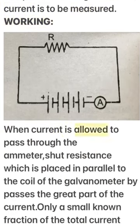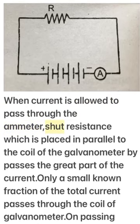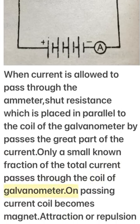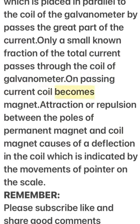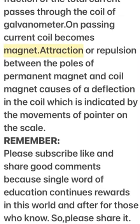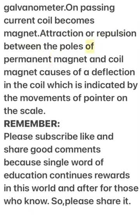Connection: The current is allowed to pass through the ammeter. The shunt resistance, placed in parallel to the coil of the galvanometer, bypasses the greater part of the current. Only a small known fraction of the total current passes through the coil of the galvanometer. On passing current, the coil becomes a magnet; attraction or repulsion between the poles of the permanent magnet and the coil magnet causes a deflection in the coil, which is indicated by the movement of the pointer on the scale.